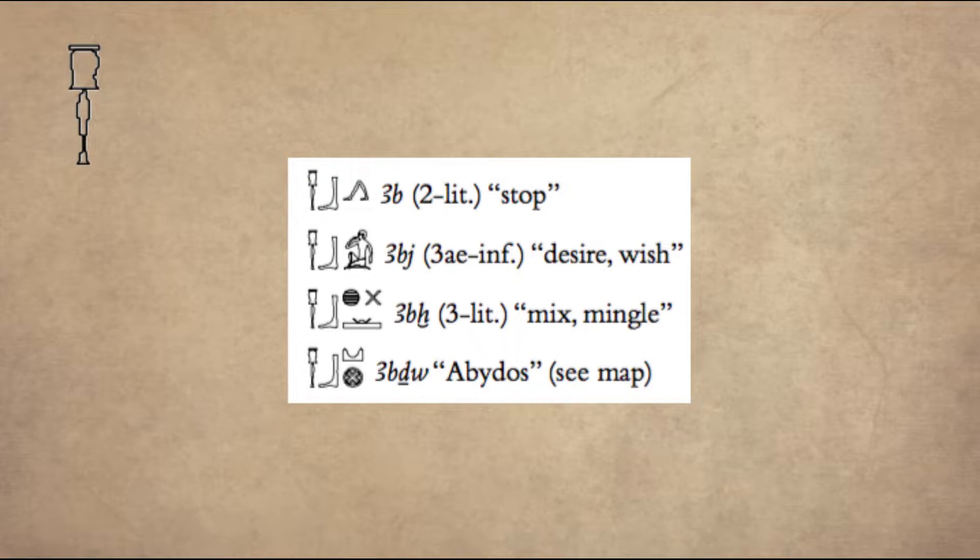Second hieroglyph on the list is ab, ab, ab. It means stop. The second example is ab-i, ab-i. It means to desire, or to want something.